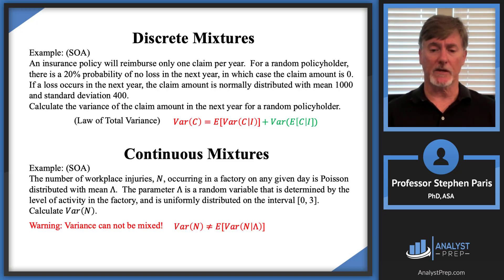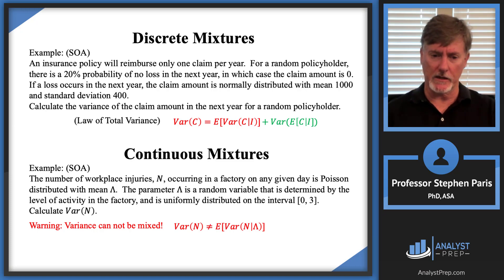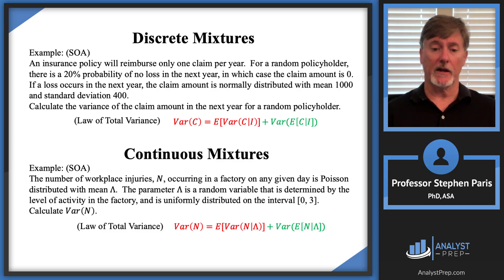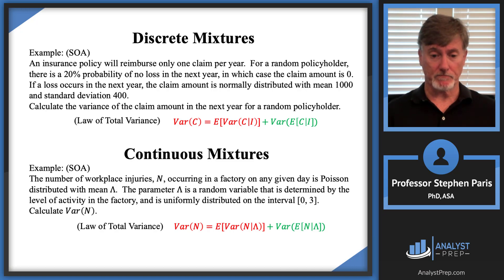Again, variances can't be mixed. But once again, if you try to mix it, the variance has always been greater. I switched the not-equal-to to a greater-than, and I know exactly how much I need to add to the right-hand side to correct it and get an equality. It's the variance of the expected value of cap N given cap lambda. That's the law of total variance.